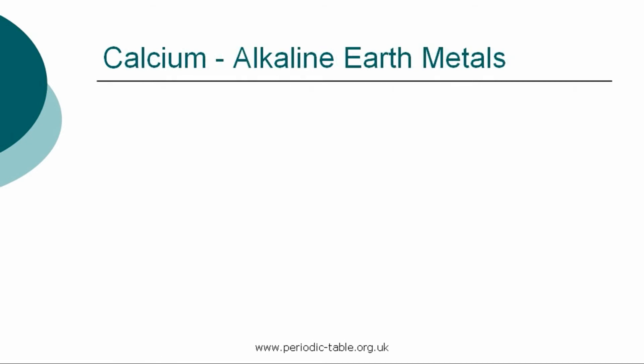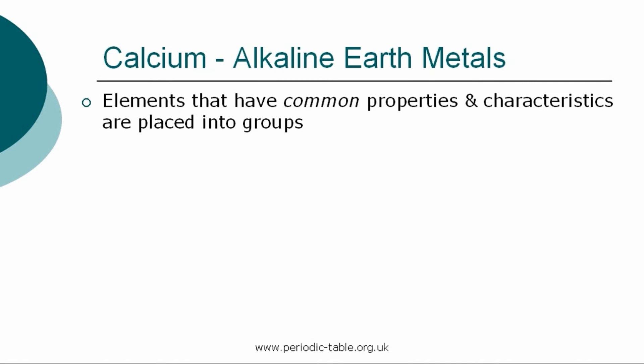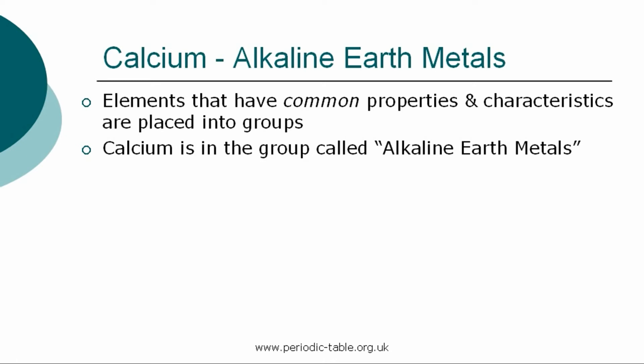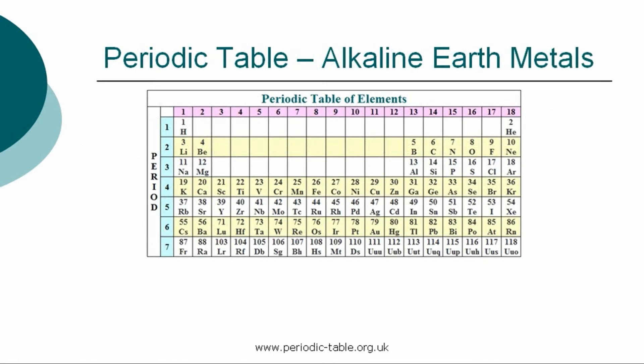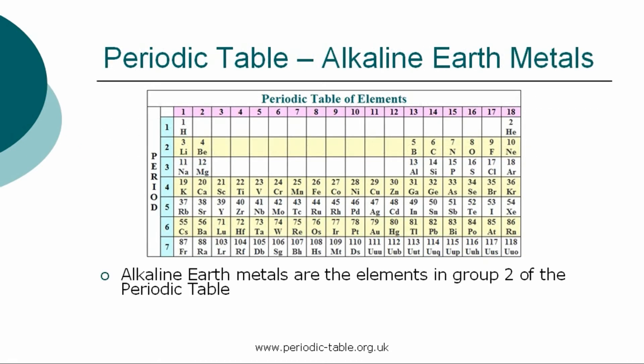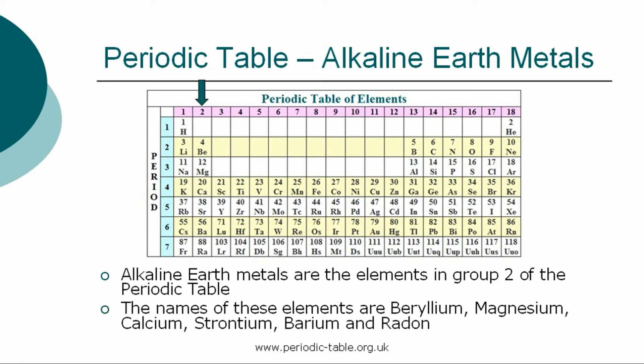Once the properties of an individual element have been identified, it is placed into a group of elements which have common properties and characteristics. Calcium is in the group called the alkaline earth metals. The six elements classified as alkaline earth metals are in group two of the periodic table. The names of these elements are beryllium, calcium, strontium, barium, and radon.